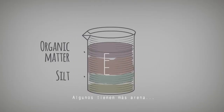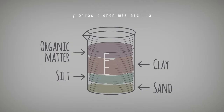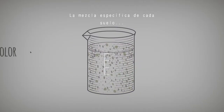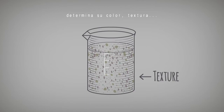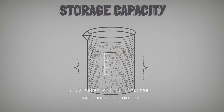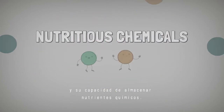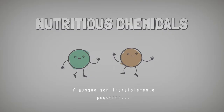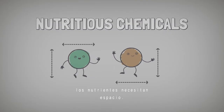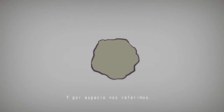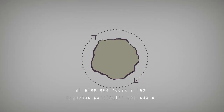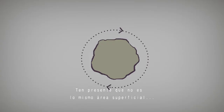Some have more sand, others more clay. Each soil's unique blend determines its color, texture, and storage capacity for nutritious chemicals. Although incredibly small, nutrients still need their space — by space, we mean the area surrounding the soil's tiny particles.